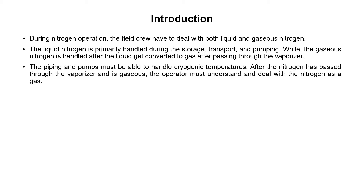The piping and pumps must be able to handle cryogenic temperature. Cryogenic temperature means a very low temperature, which is required for converting gaseous nitrogen into the liquid state. The nitrogen used in the field is present in liquid form initially, and its temperature is very low — minus 320 degrees Fahrenheit. So the piping and pumps must be able to handle this cryogenic temperature.